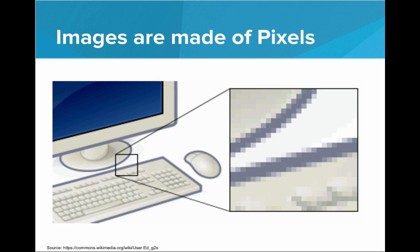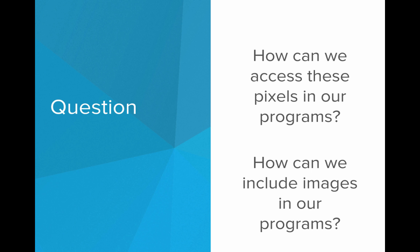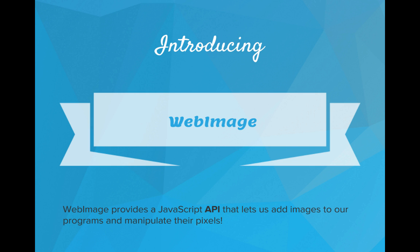We've seen that images are made of pixels. The question is, how can we access these pixels in our programs? How can we get it so that we have an image in our code and we can access that pixel data and manipulate it? Well, introducing WebImage. WebImage provides a JavaScript API that lets us add images to our programs and manipulate their pixels.